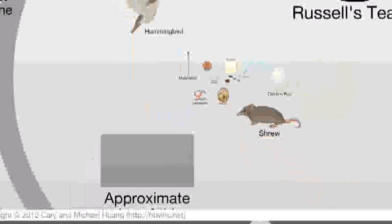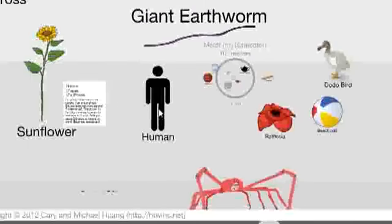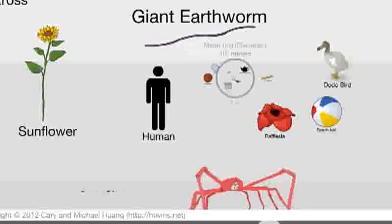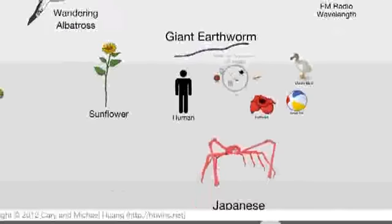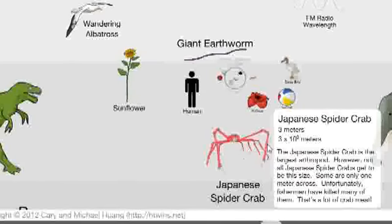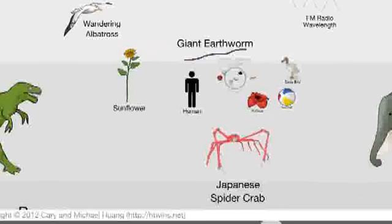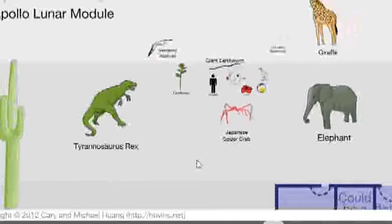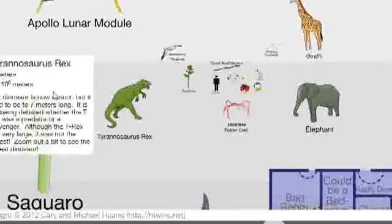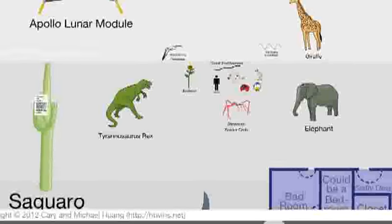In this video I'm just going to zoom out. Let's go back to a human being here. If you zoom out, it gives you some scale. There's a Japanese spider crab that's apparently larger than a human being. Continuing to zoom out, you reach the T-Rex, and it gives you the size of T-Rex: 7 times 10 to the power of 0.